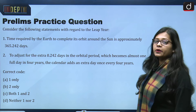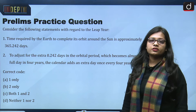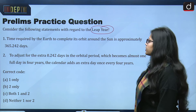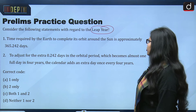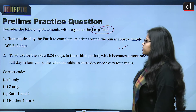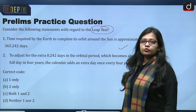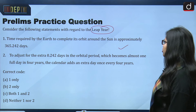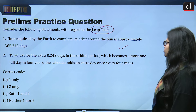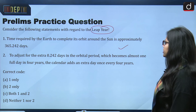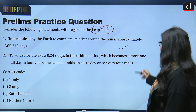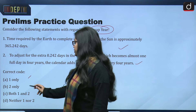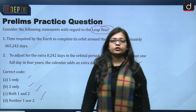Now, a prelims practice question — please give the answer in the comments. Consider the following statements regarding the leap year: Statement 1: The time required by the earth to complete its orbit around the sun is approximately 365.242 days. Statement 2: To adjust for the extra 0.242 days in the orbital period, which becomes almost one full day in four years, the calendar adds an extra day once every four years. Select the correct code: only one, only two, both one and two, or neither one nor two.